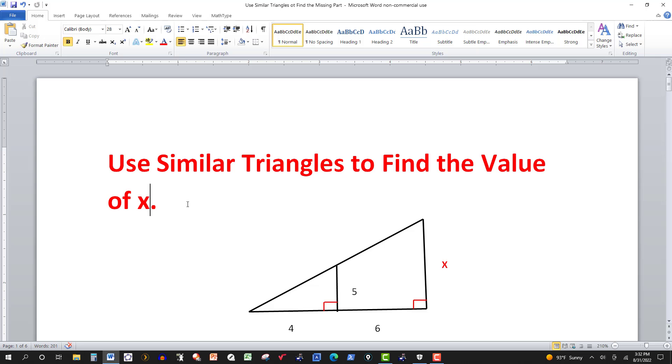In this video, we want to use similar triangles to find the value of x. Two triangles are similar if they have the same shape and the corresponding angles have the same measure. Along with that, corresponding sides are proportional.